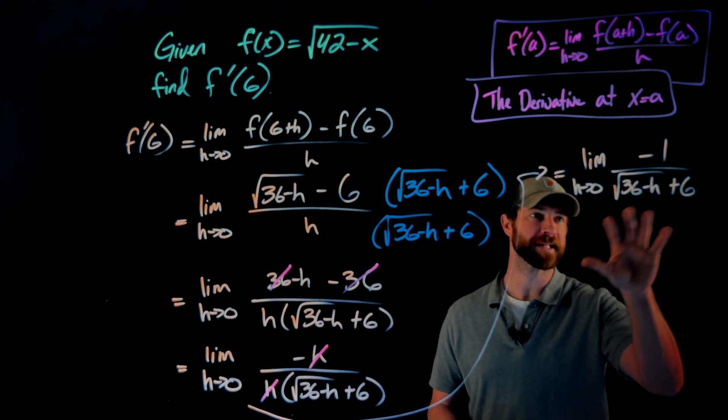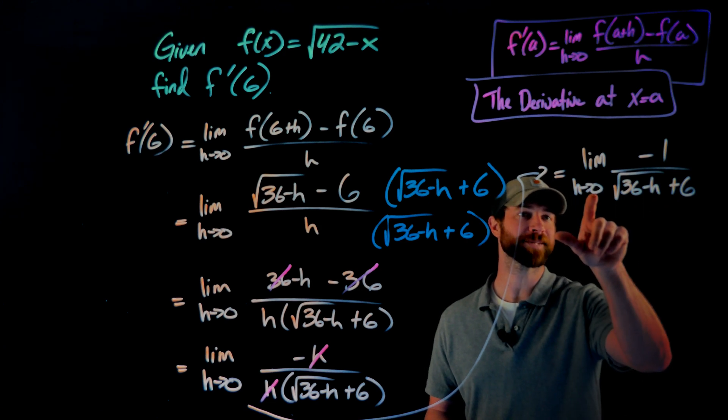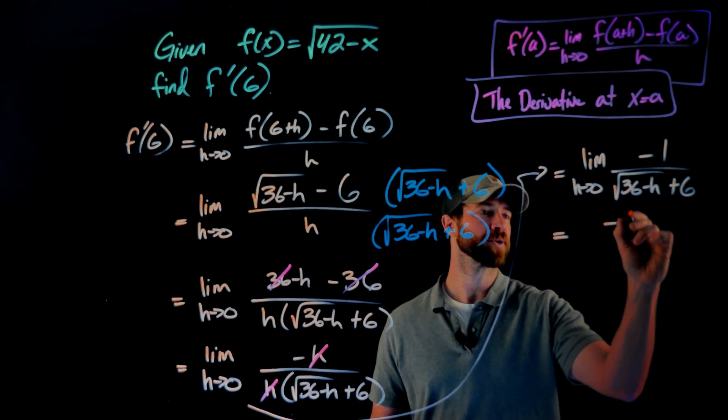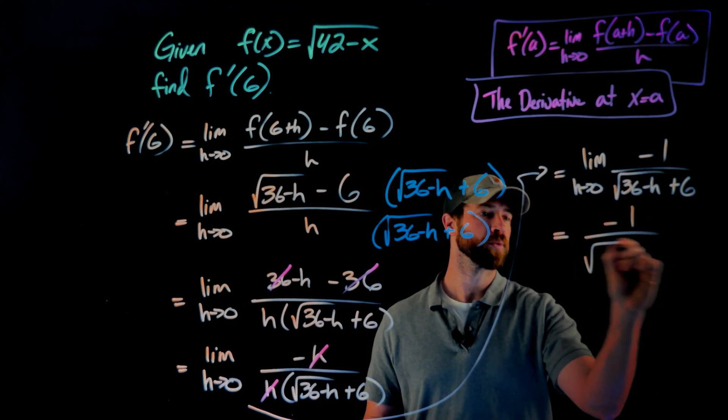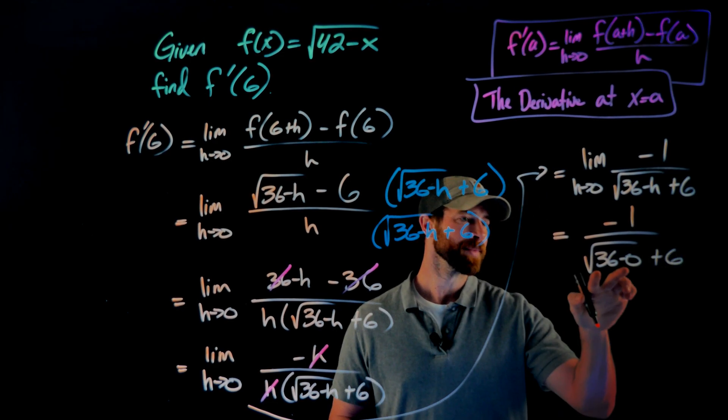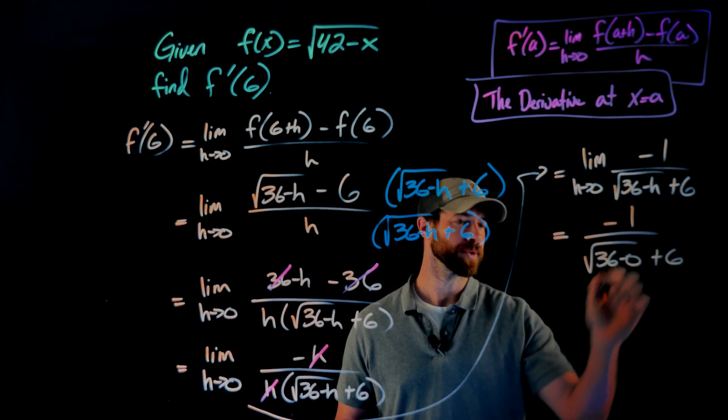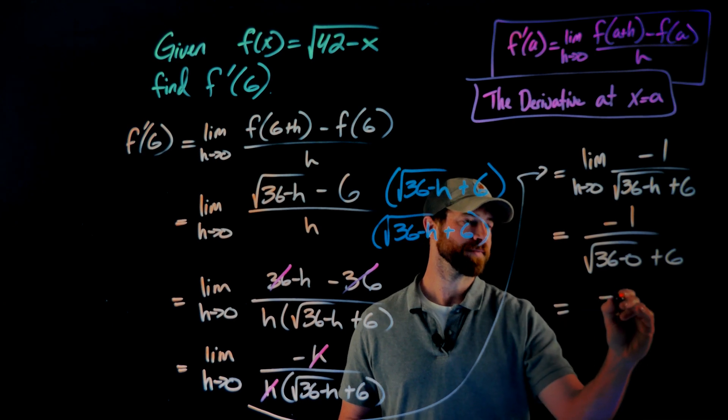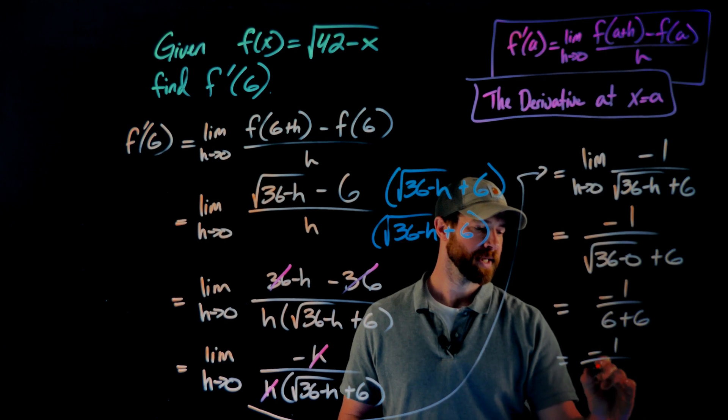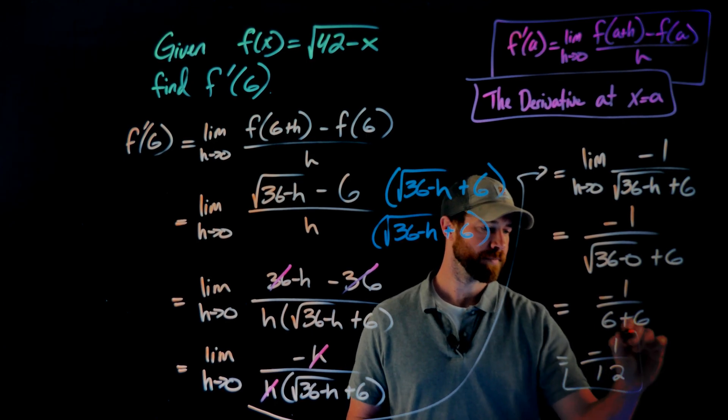So my next move is to simply plug in zero for the h right here to evaluate this limit, which will give us negative one over the square root of 36 minus zero plus six. This is the square root of 36, which is just six. So this gave us negative one over six plus six, which finally simplifies into negative one twelfth.